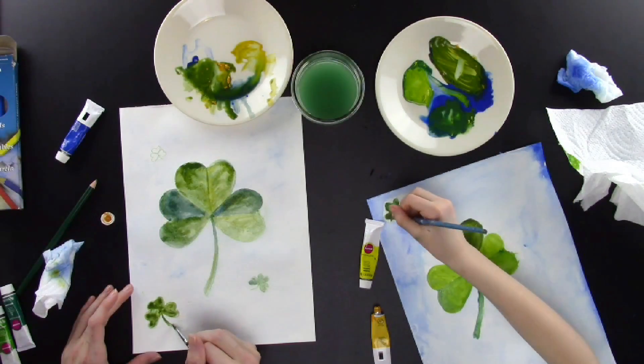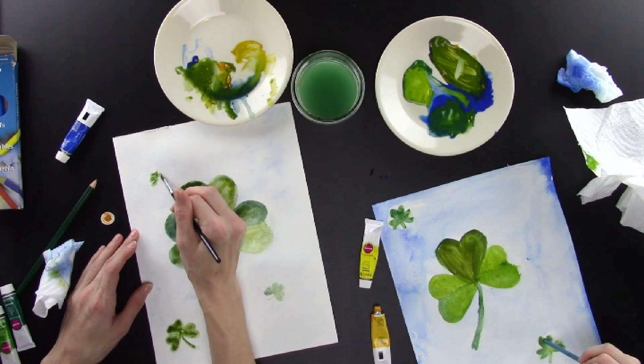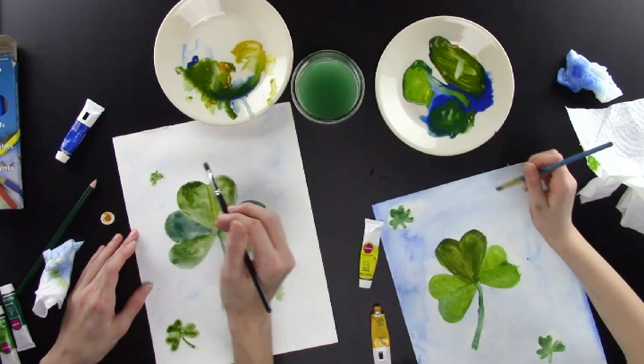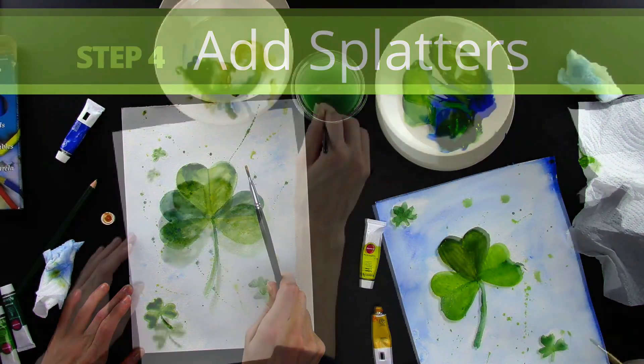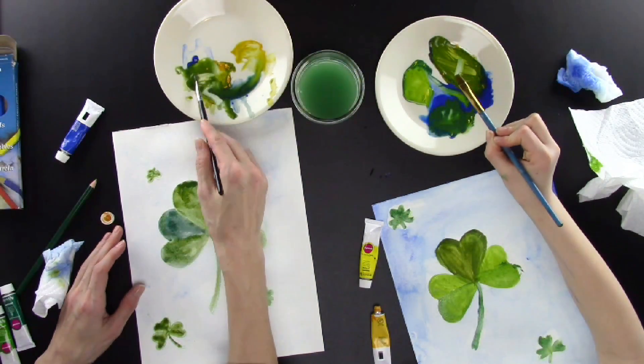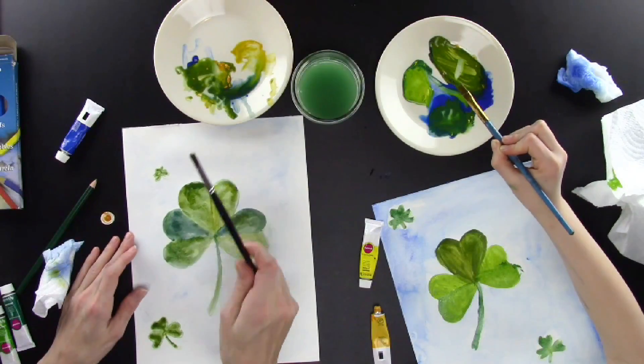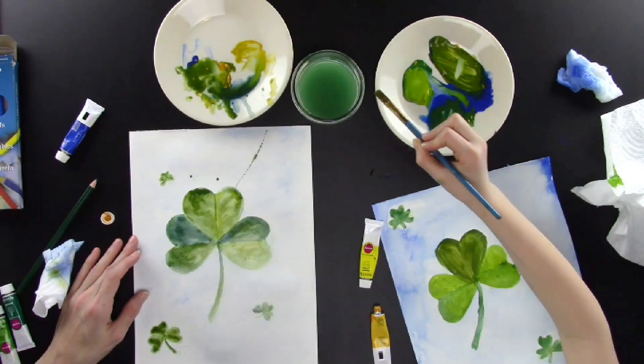The rest of my clovers I'm just going to color in with my paint. Once you're done painting in all of your shamrocks, then you're on to the funnest part, well at least I think it's the funnest part. Step 4: Add splatters. Now you want to get a lot of water on your brush and a lot of paint, and then you're going to flick the paint on your paper.